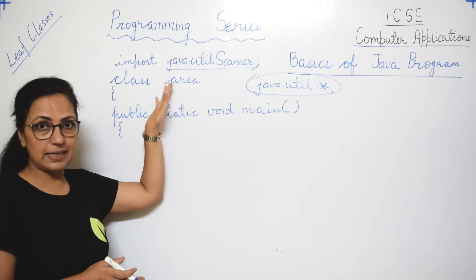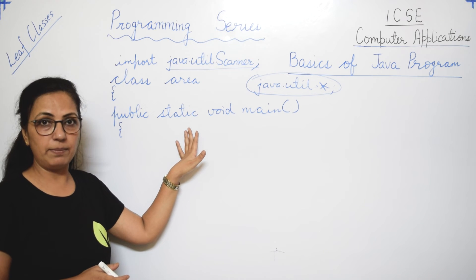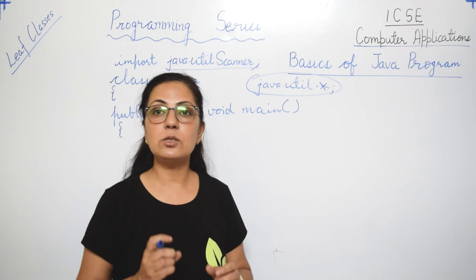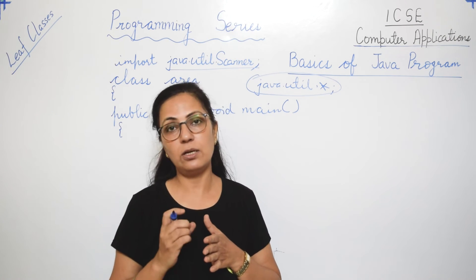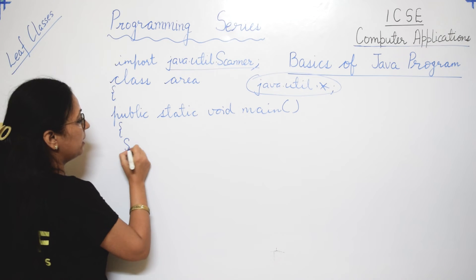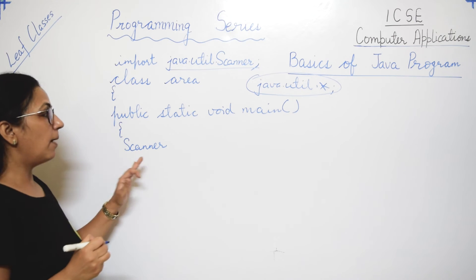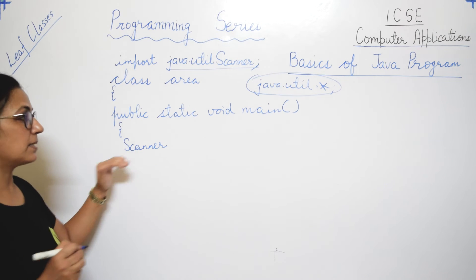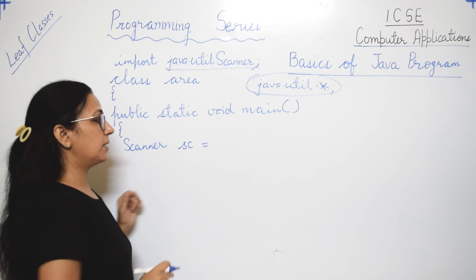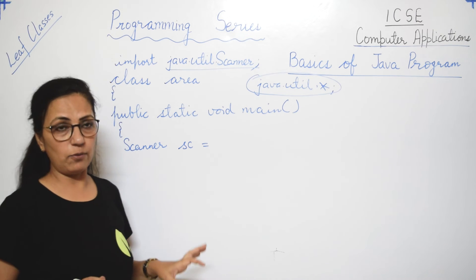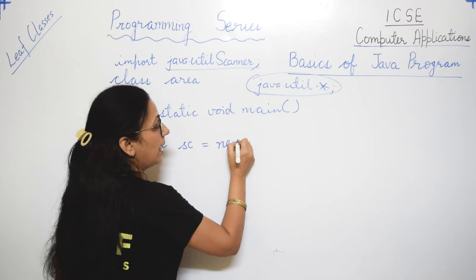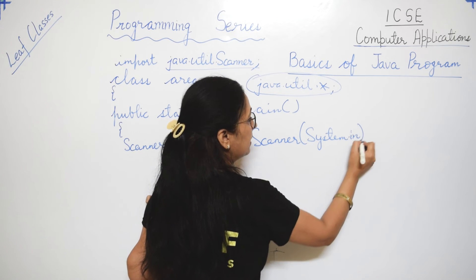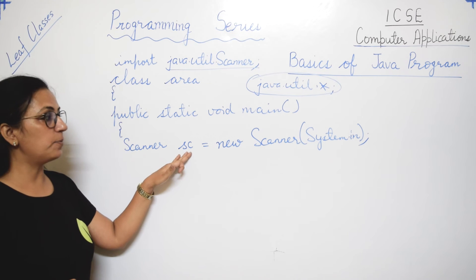The class name and 'public static void main' remain the same. After this, we create an object of the Scanner class, because to access any function we need to call it using an object name. The object creation statement is: Scanner sc = new Scanner(System.in). Here 'sc' is a user-defined object name — you can write sc, n, ob, or any name of your choice.